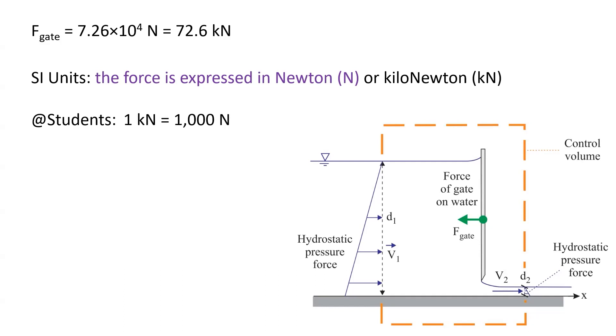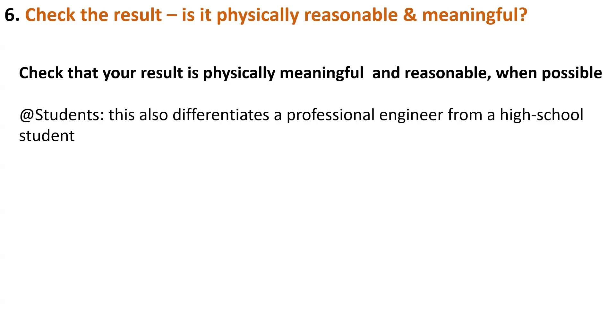Then we need to check that our result is physically meaningful. This is, again, something that will differentiate a professional engineer from a high school student. How can we do this? Let us check a simple case. What happens if the sluice gate is completely closed?